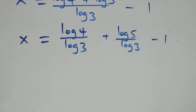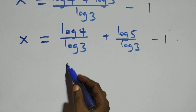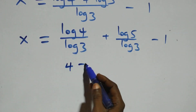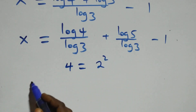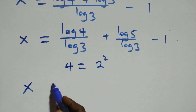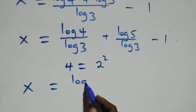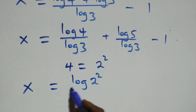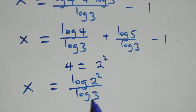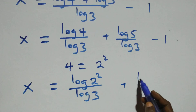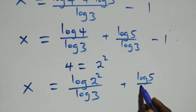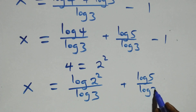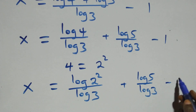Subscribe for more videos and turn on the notification bell. Next, we can write four as two times two, which is two squared. So x becomes log of two squared over log three, plus log five over log three, minus one.